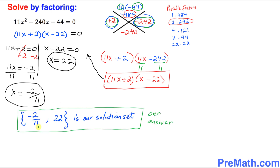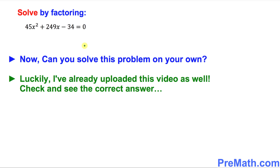Thus, negative 2 over 11 and 22 is our solution set, and that is our answer. Finally, here is your assignment — can you solve this problem on your own exactly the same way I modeled it for you? I have already uploaded that video as well, so check it out and see the correct answer. Thanks for watching and please don't forget to subscribe to my channel for more exciting videos.